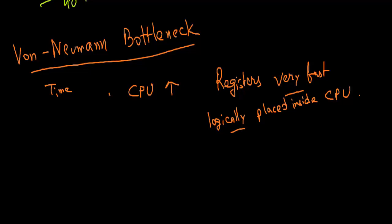This speed disparity is the keyword right here. This CPU memory speed disparity is referred to as Von Neumann bottleneck.